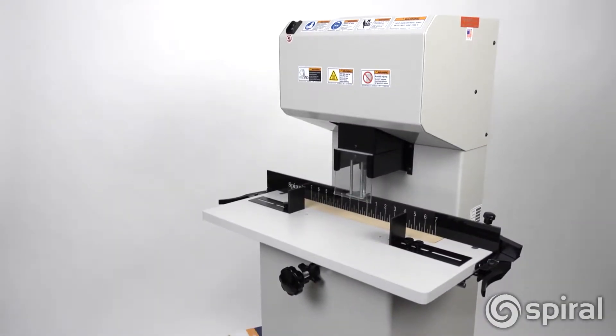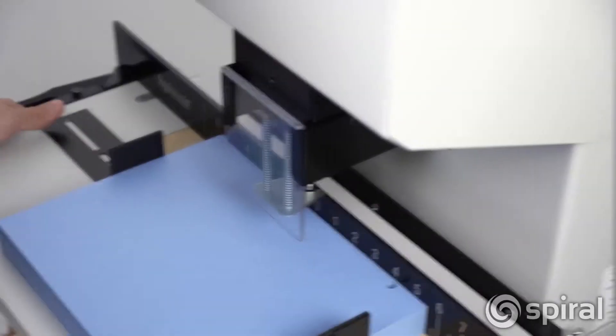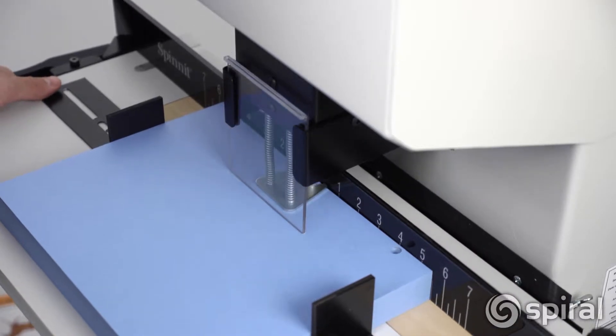The Lassco Wiser FM2 is an economical heavy-duty floor standing paper drill. Designed to drill one hole at a time in a stack of paper up to two inches thick.